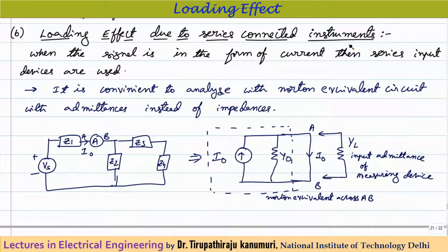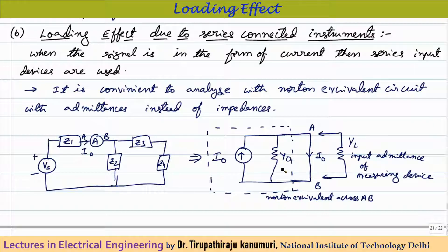Similarly, loading effect can occur due to series-connected instruments, which are used for measuring current. Consider a voltage source with impedances, and I want to measure the current through point A-B where an ammeter is connected. This is analyzed using Norton's equivalent circuit. Across terminals A-B, the Norton equivalent is a short-circuit current ISC in parallel with Norton admittance Y0 = 1/Z0.